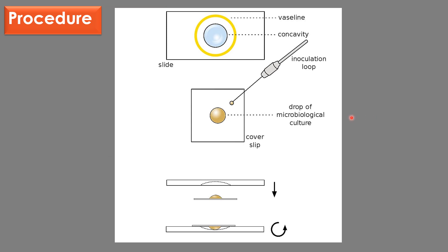Procedure: Place a small drop of bacterial culture in the center of the coverslip and place a little vaseline in the cavity slide over the coverslip with the hanging drop suspension in the depression.